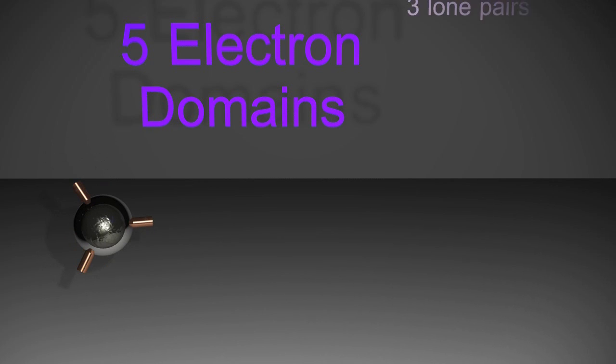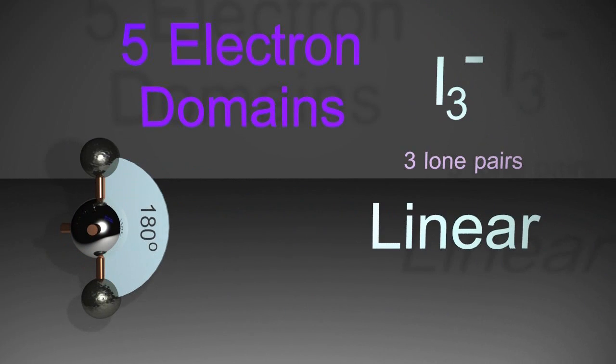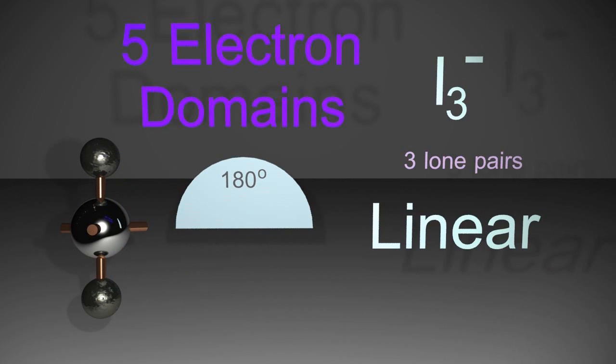Three lone pairs, each around the equator, well that gives us back 180 degrees. The repulsion of the three lone pairs because they're symmetrical around the equator cancel each other, giving us a linear molecule.